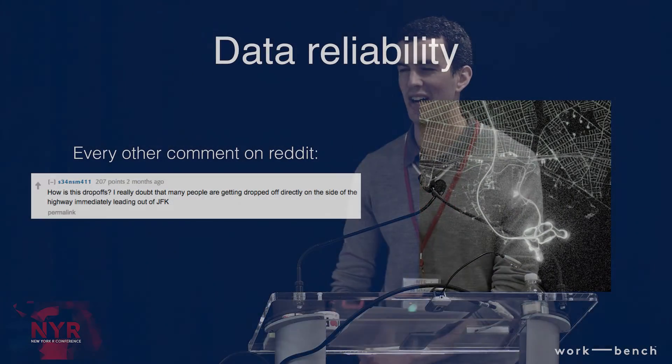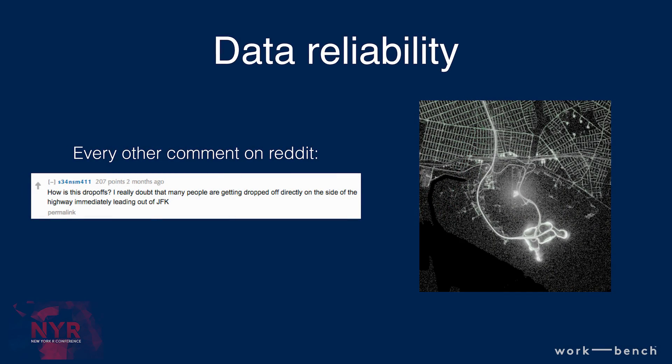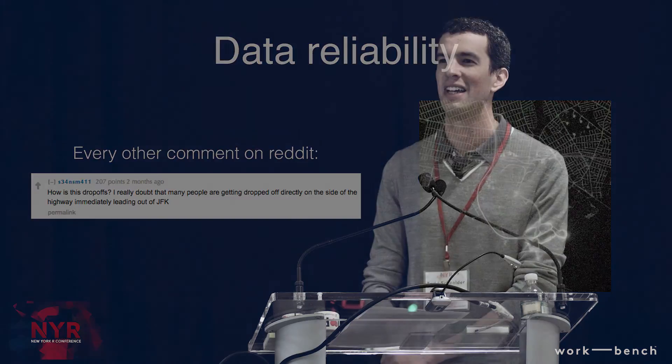You should obviously be questioning data reliability. This was shared around the internet and got comments like: nobody barrel rolls out of a cab on the Van Wyck. You can see some dots approaching JFK, and of course they're right — that is almost certainly faulty data. We don't know exactly why: it could be that taxi meters are unreliable, or taxi drivers turn them on or off at the wrong time. The point is it's always important to be aware of limitations in the data and make sure you don't draw the wrong inference.